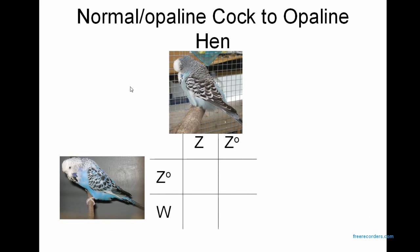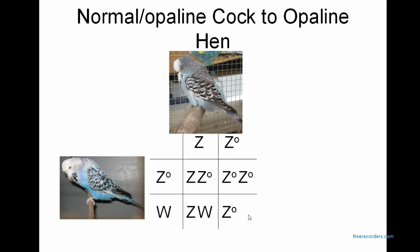Now putting a normal split Opaline cock to an Opaline hen: the cock gives half his babies the normal chromosome and half the Opaline chromosome; the hen gives half the babies the Opaline chromosome and half the W. So 50% of cocks will appear Opaline, 50% of cocks will be split for Opaline, 50% of hens will appear Opaline, and 50% of hens will be normal.